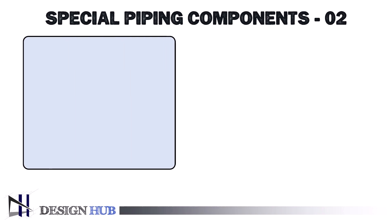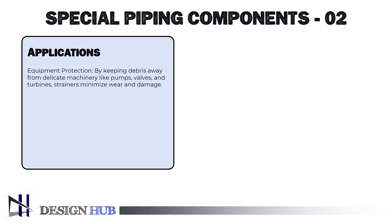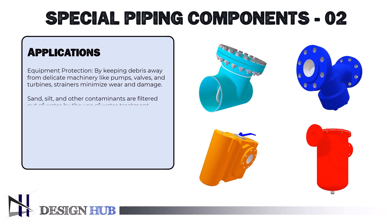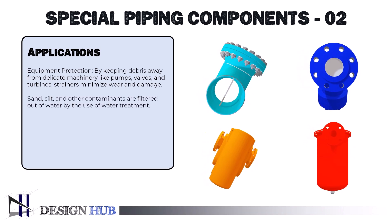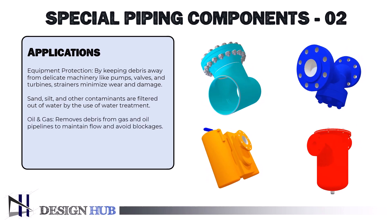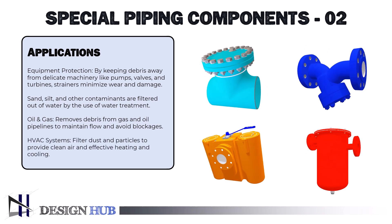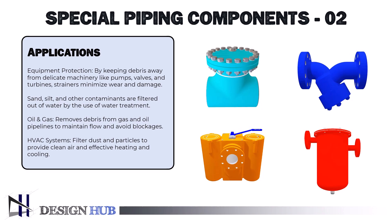Let's see the applications of the strainer. Equipment protection: strainers minimize wear and damage by keeping debris away from delicate machinery like pumps, valves, and turbines. Water treatment: sand, silt, and other contaminants are filtered out of water. Oil and gas: removes debris from gas and oil pipelines to maintain flow and avoid blockages. HVAC systems: filter dust and particles to provide clean air and effective heating and cooling.